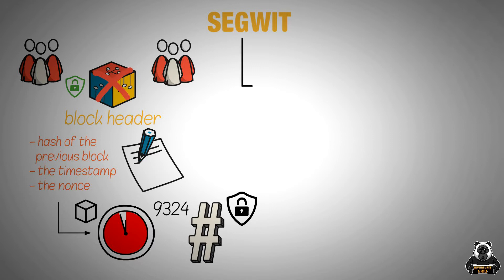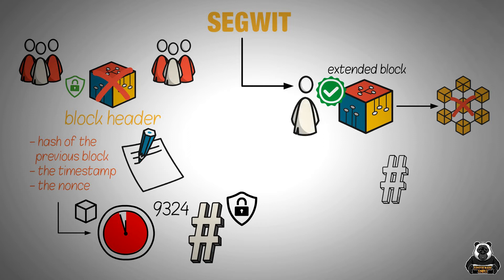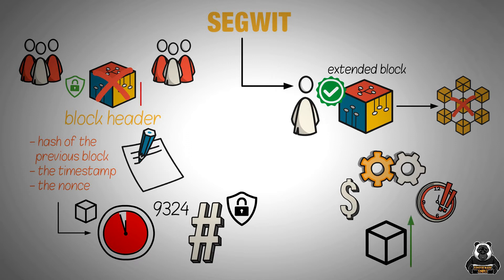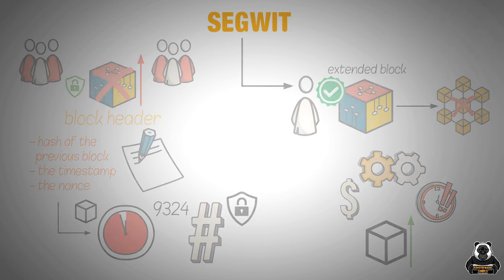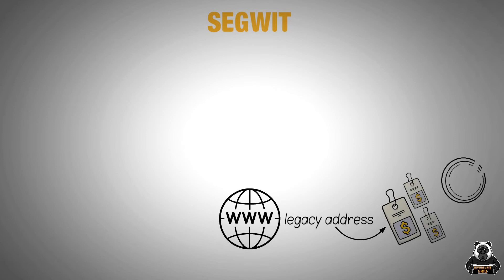SegWit stores this data not in the header but off to the side in what's called an extended block. This extended block is not part of the main blockchain, but it's still verified by the miners. By removing certain data from the block header, SegWit makes the protocol more efficient and allows for more transactions to be stored in each block. This means that the block size can be increased without increasing the actual size of the header. As a result, SegWit addresses are smaller than legacy addresses, which means that more transactions can fit into a single block.